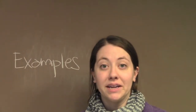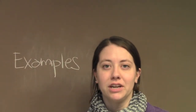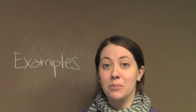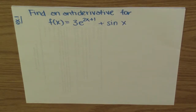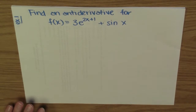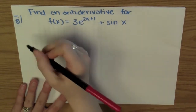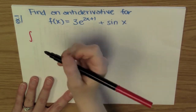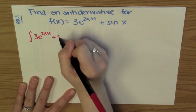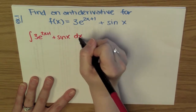We've learned a lot of the basics about anti-differentiation. Let's use what we've learned so far to work out a couple of examples. For our first example, we'll start off on the easier side. Let's find an anti-derivative for the function f(x) = 3e^(2x+1) + sin(x). So I want to find the anti-derivative of 3e^(2x+1) + sin(x) dx.